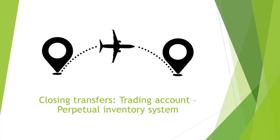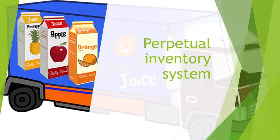In this short video, we will discuss the closing transfers relating to cost of sales when a business applies the principles of the perpetual inventory system. When a business makes use of the perpetual inventory system, all inventory purchased are recorded directly in the inventory account. This is done for both credit and cash purchases of inventory. When any inventory is sold, the amount paid for that inventory needs to be recorded as cost of sales at the same time the sale took place.